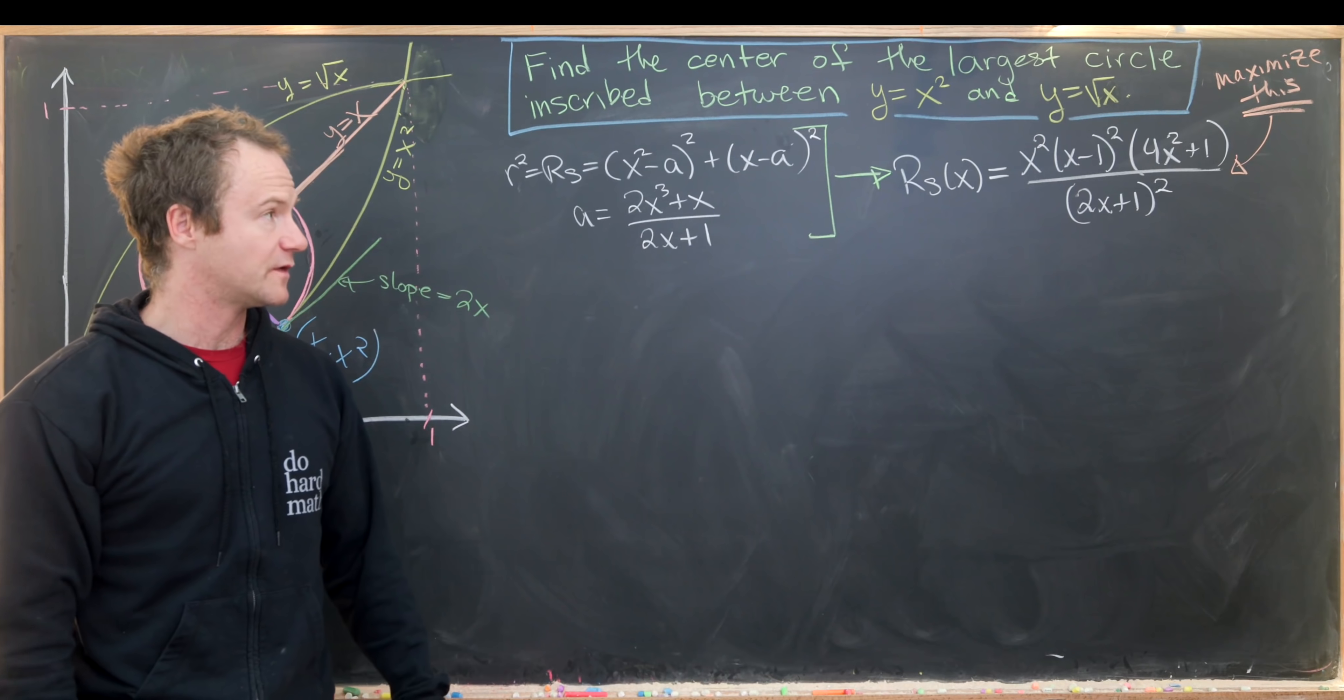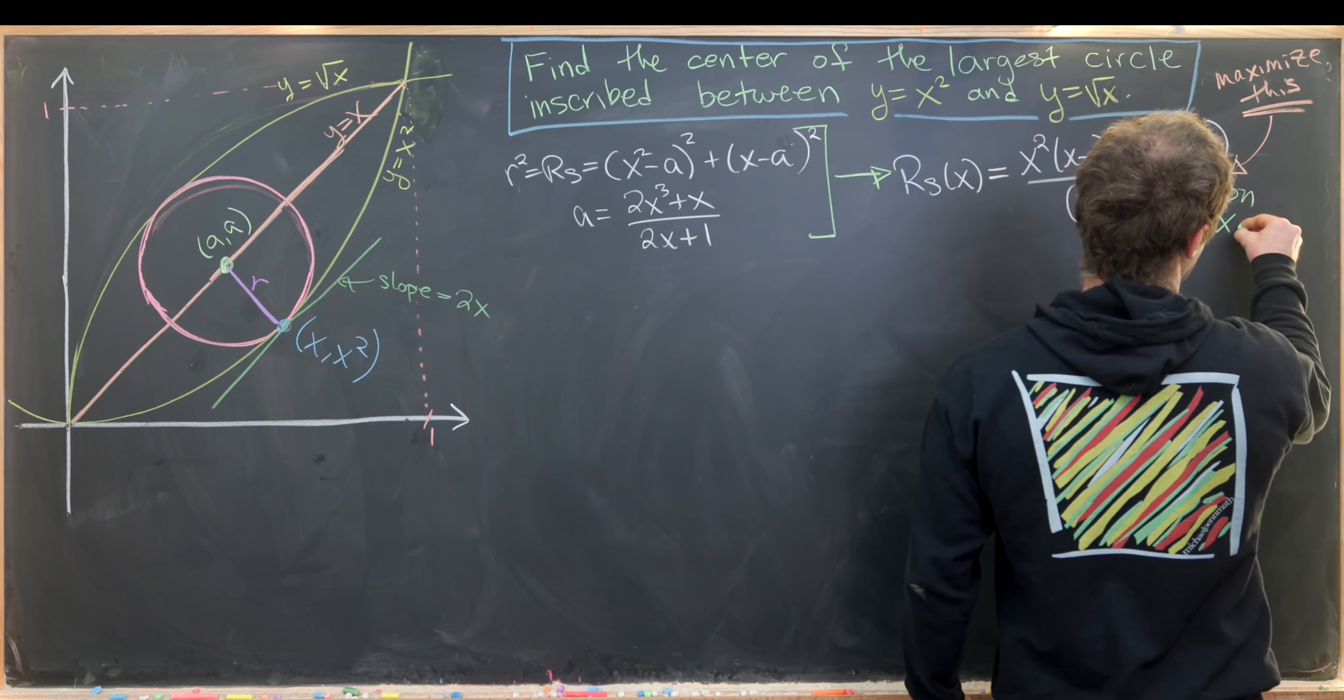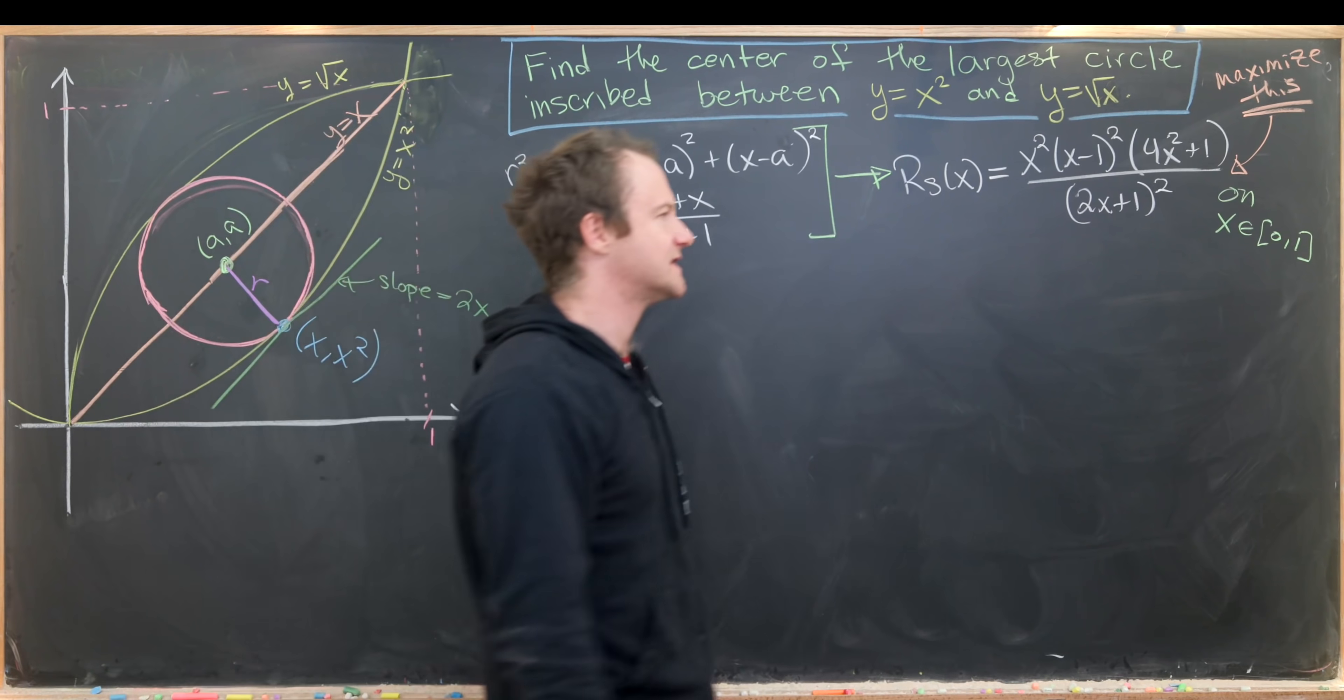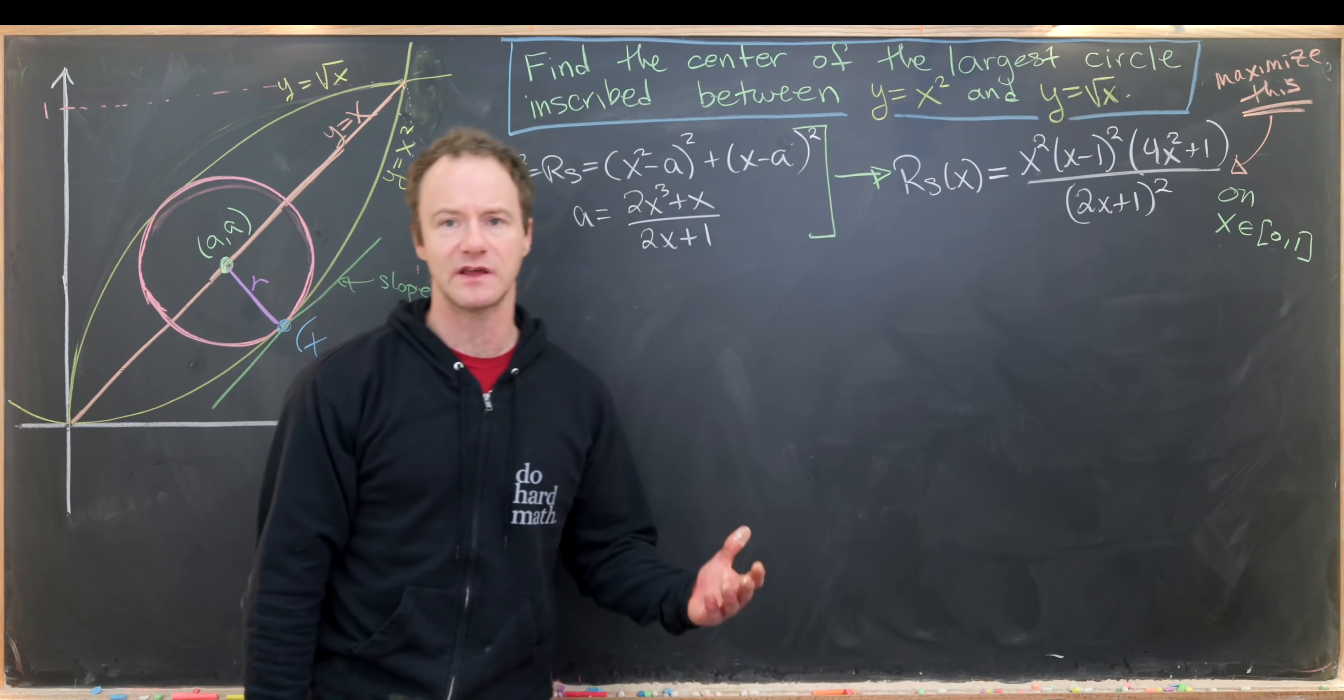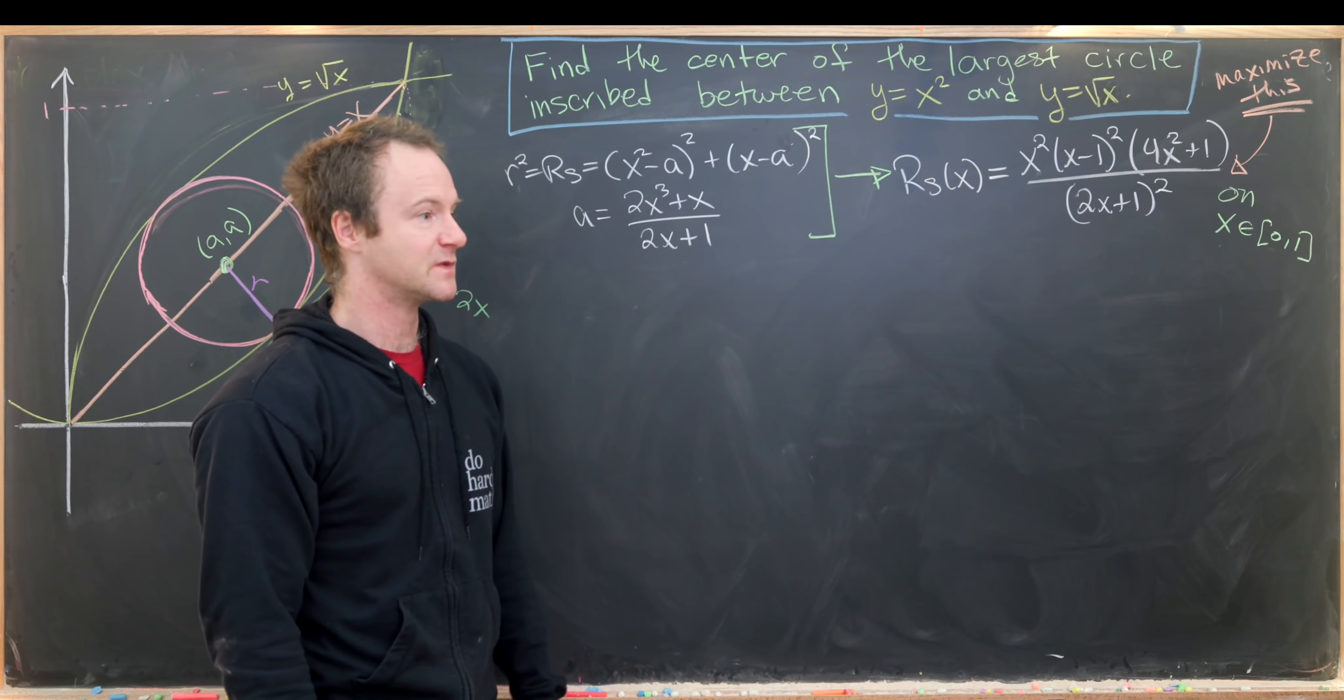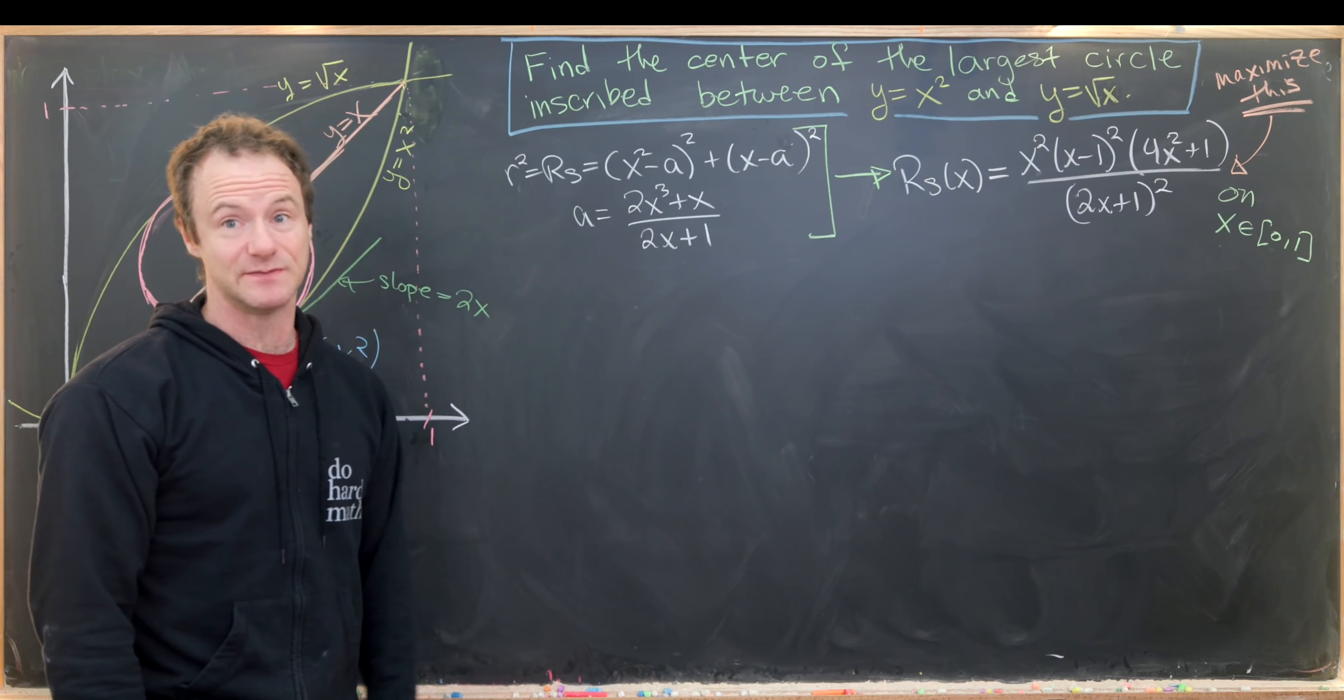We want to maximize this on a certain interval, because x values can only occur between 0 and 1. At x equals 0 we get a radius of 0, which is clearly a minimum. At x equals 1 we also get radius 0, which is again a minimum. So if we can find a single critical point between 0 and 1, we know that will be the maximum.